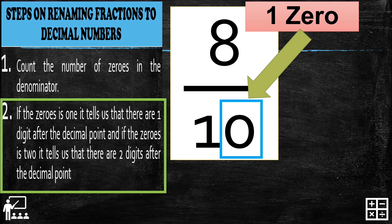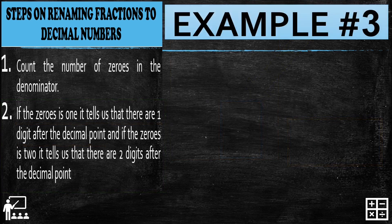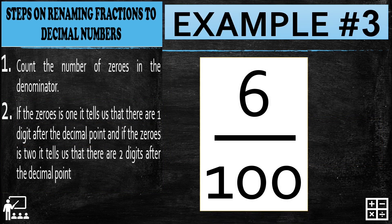Since there is one zero, we proceed to the rule: if the zeros is 1, it tells us that there is one digit after the decimal point. So my answer for this is 0.8. As you can see, there is only one digit after the decimal point because there is one zero on my denominator.